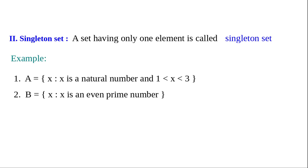Second example: B equals the set of all x such that x is an even prime number. The only even prime number is 2, so B contains only one element, that is {2}. Another example: C equals the set {0}, containing only one element zero. Another example: D equals the set {5}, containing only one element. All of these are examples of singleton sets.